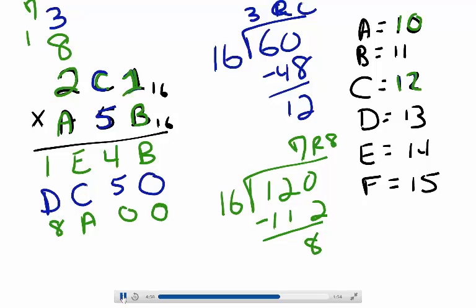Then finally, 2 times A equals 20, plus 7.